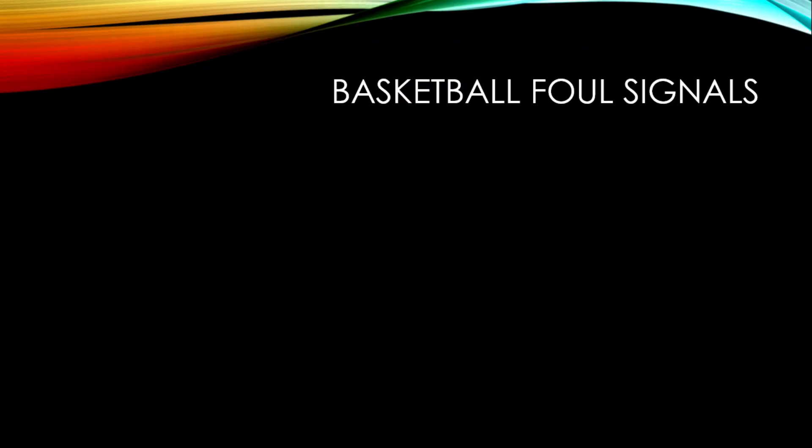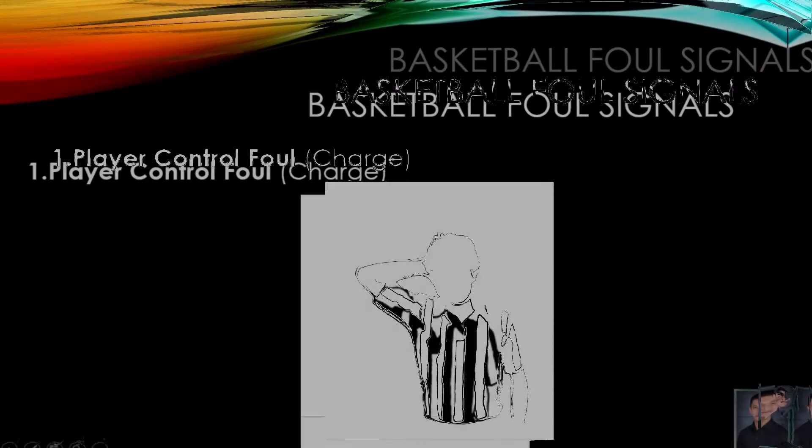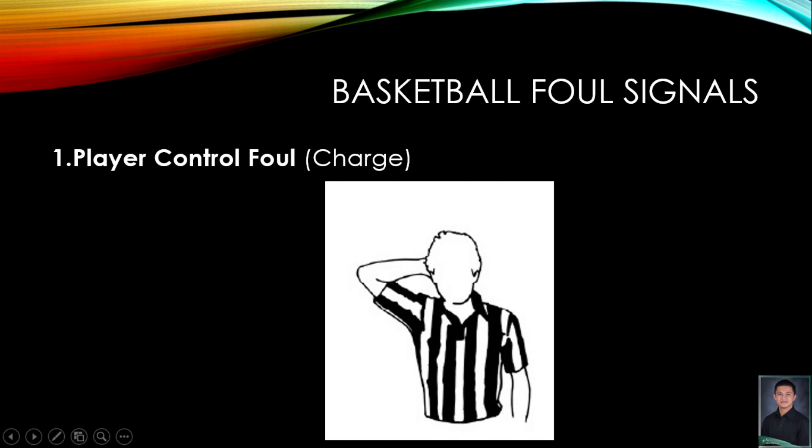Now we have here the basketball foul signals. Number one is the player control foul or the charging foul. One hand on the back of the head and the other pointing in the opposite direction of the play indicates a charge call has been made.